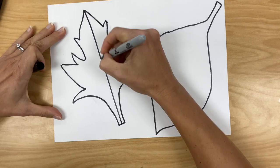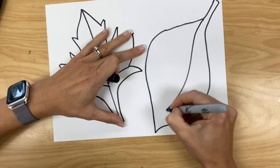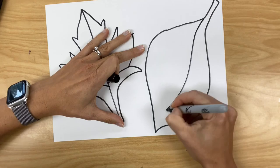Then you're going to take your Sharpie and you're going to divide your leaf into about six sections. So you're going to draw five lines, one down the center and then four off the center line, like so.